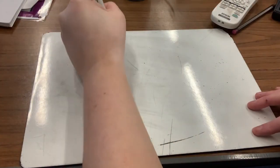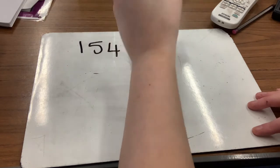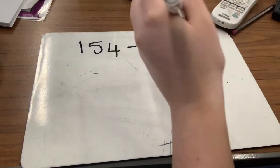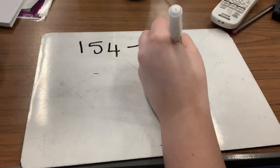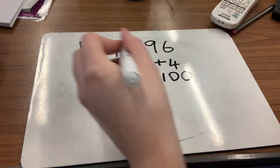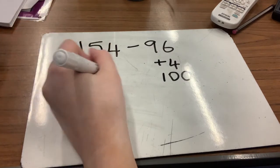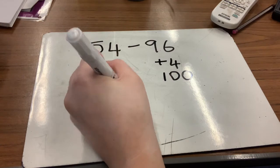Okay, question number five: 154 take away 96. Pause and give it a go. Okay, so let's count up to our next 10. We add on four to take us up to 100. Now we need to get from 100 all the way up to 154, so I know I add on 54. Put our 54 and our four together to make 58.